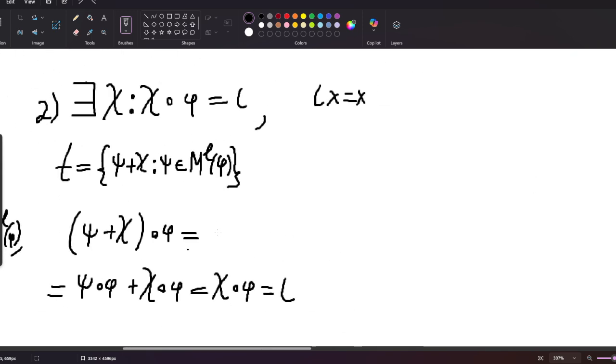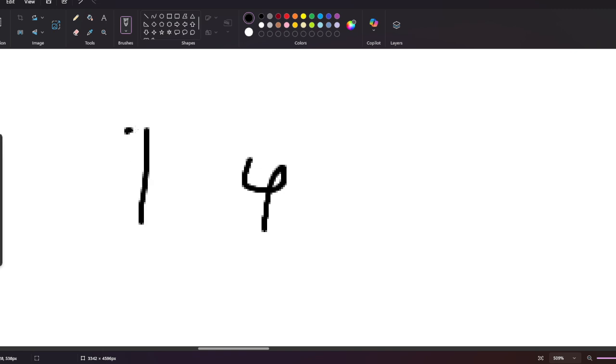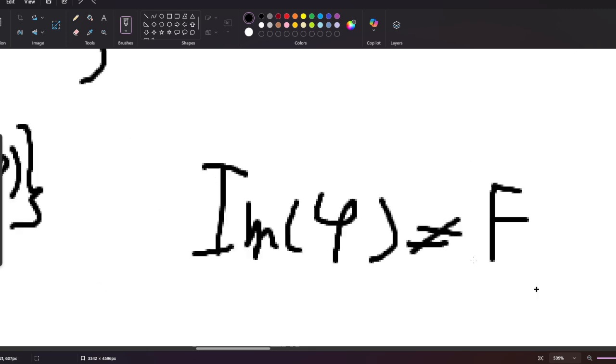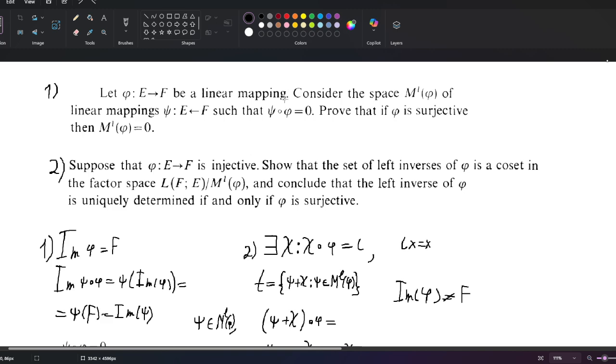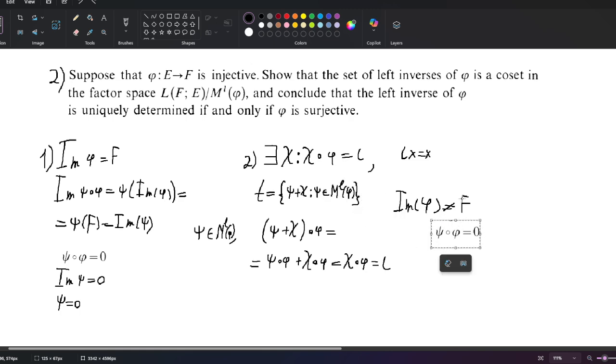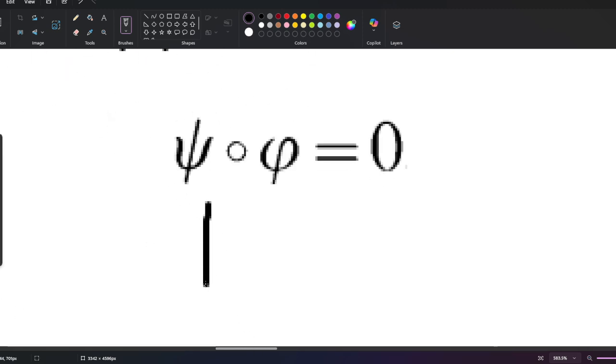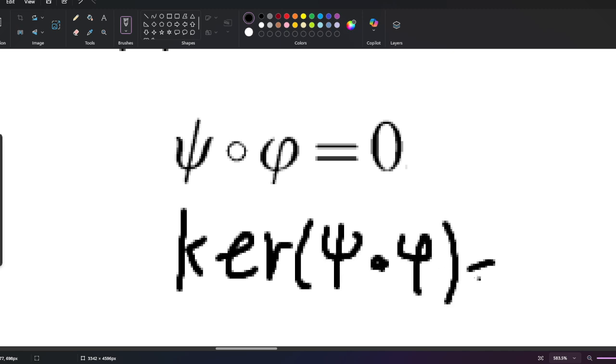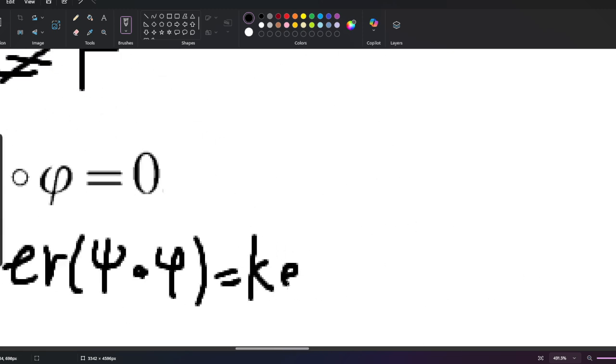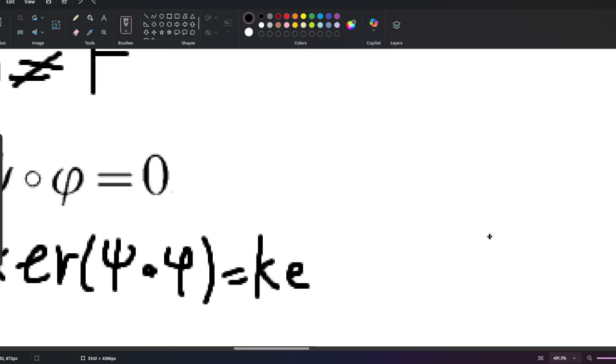Let's say the image of phi is not F, so phi isn't surjective. Let's take the kernel on both sides. The kernel of psi composed with phi equals the kernel of the zero mapping, which is just E.